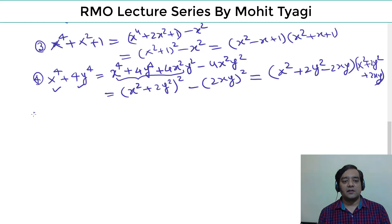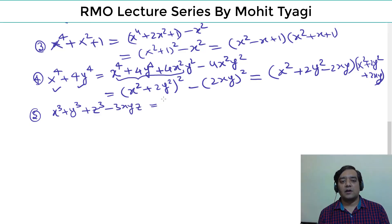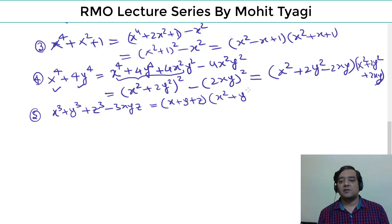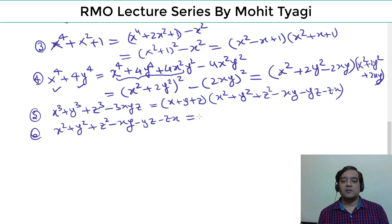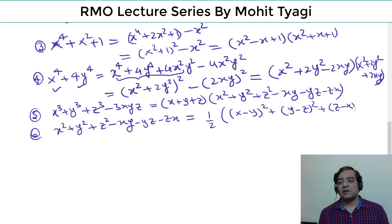Fifth identity: x³ + y³ + z³ − 3xyz = (x + y + z)(x² + y² + z² − xy − yz − zx). The second factor can also be written as ½[(x−y)² + (y−z)² + (z−x)²].